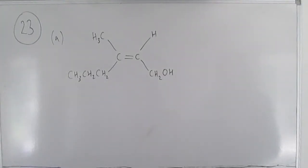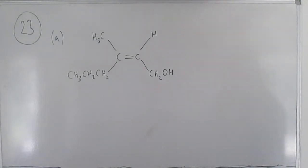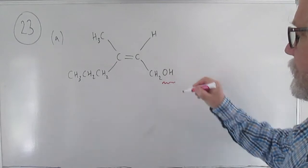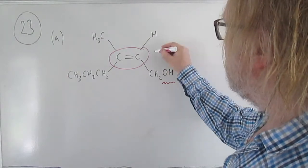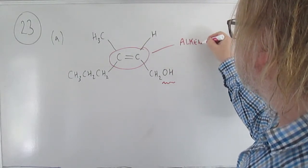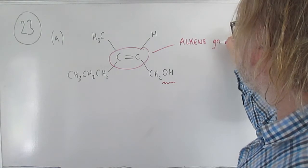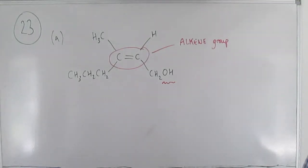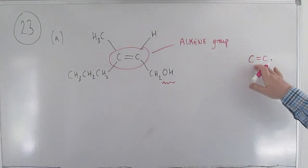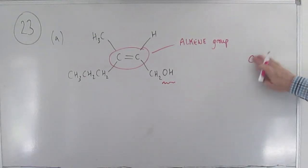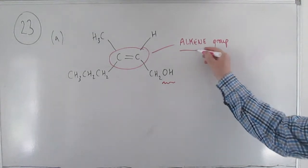Question 23 introduces compound E and asks about its two functional groups. It tells us one is a primary alcohol, which is obvious from the structure. The other one is the C=C double bond, and remember that is called an alkene group. It specifically says 'name' the other functional group — so drawing it won't do; you actually have to write the word 'alkene'.